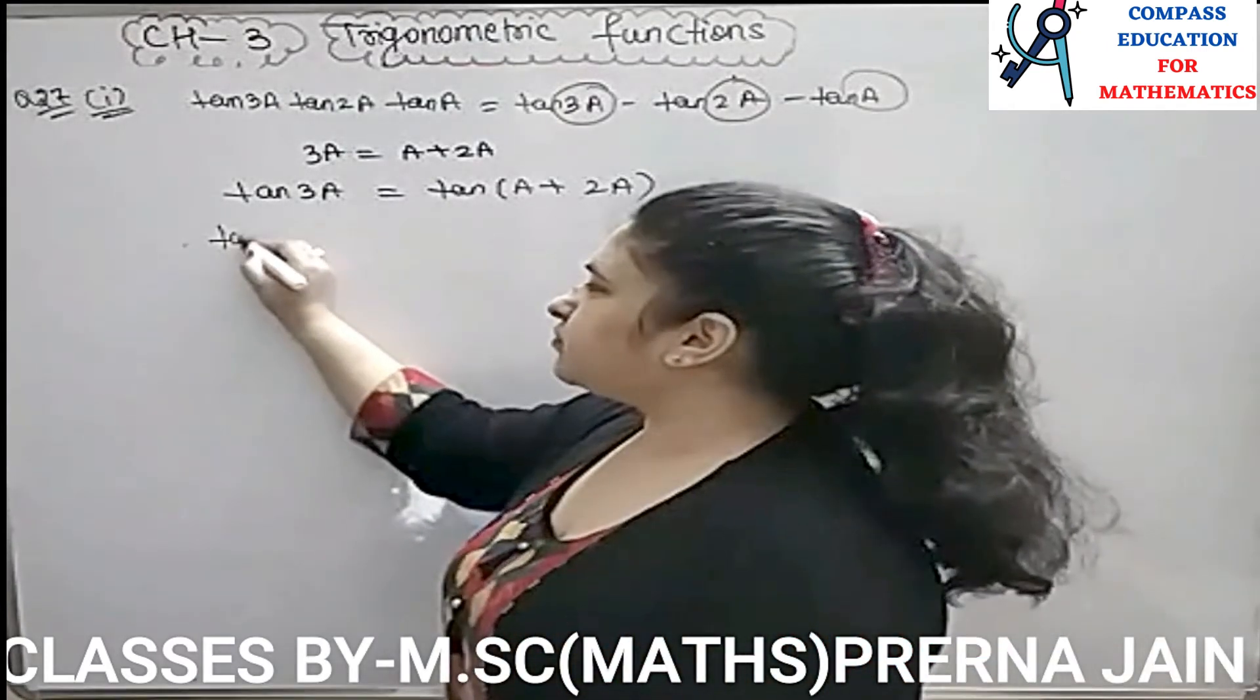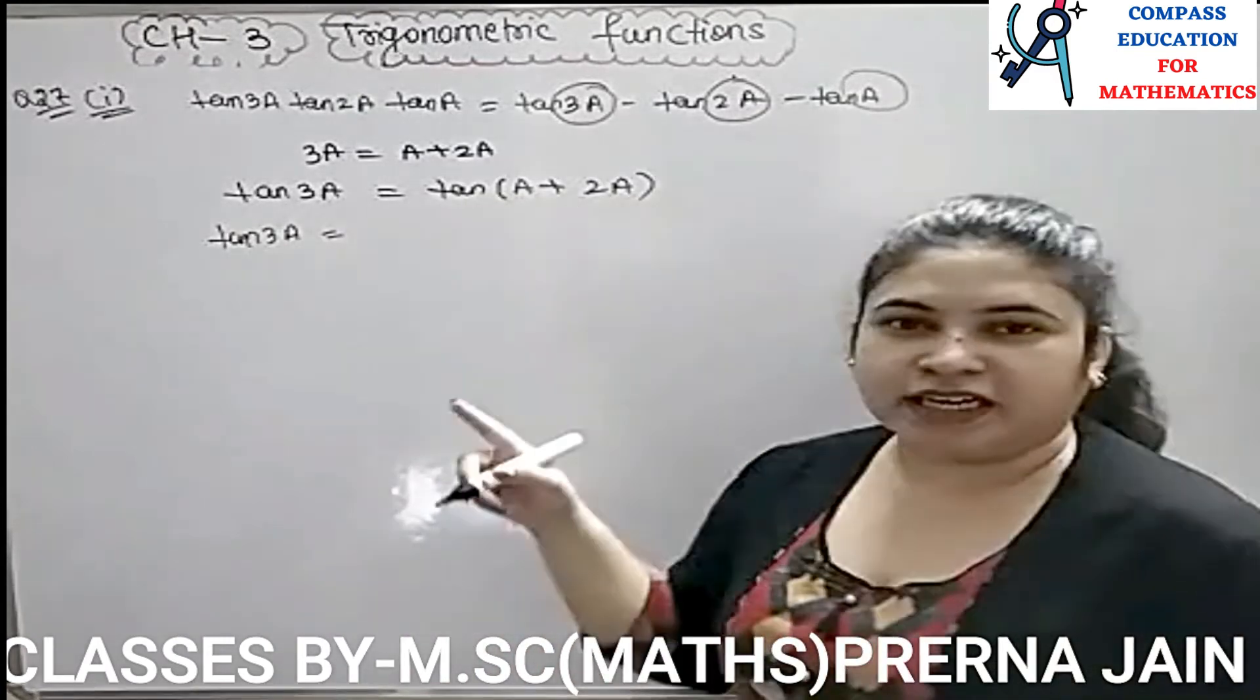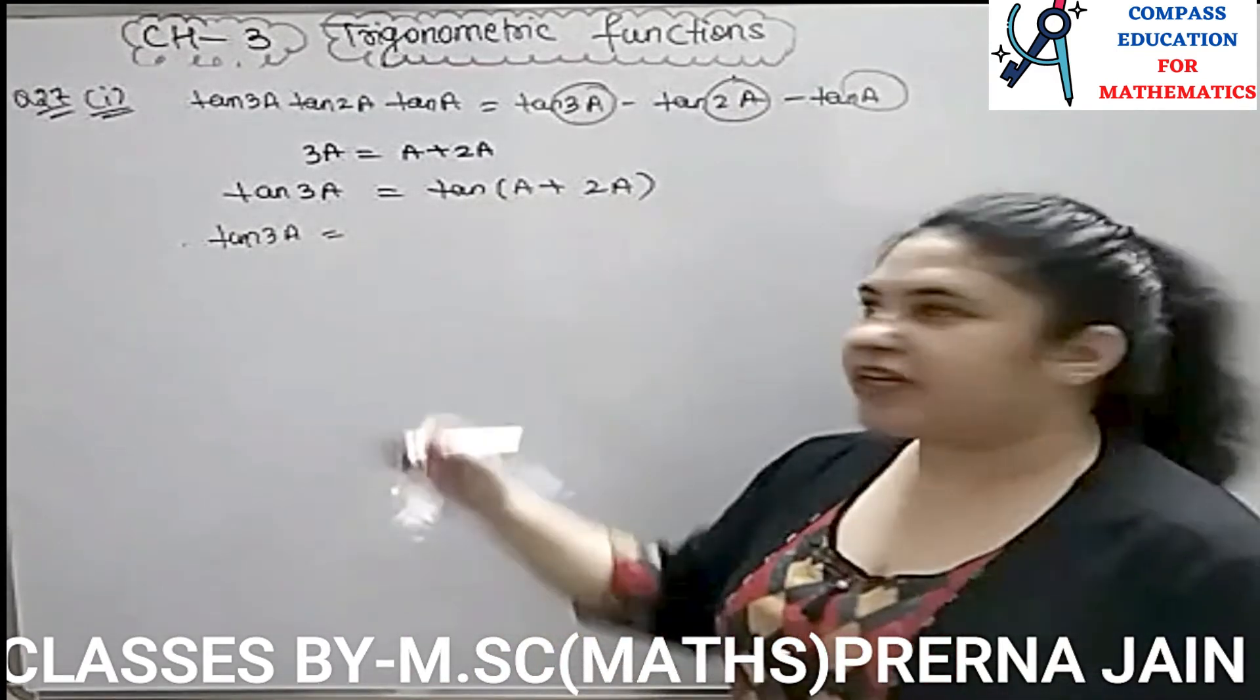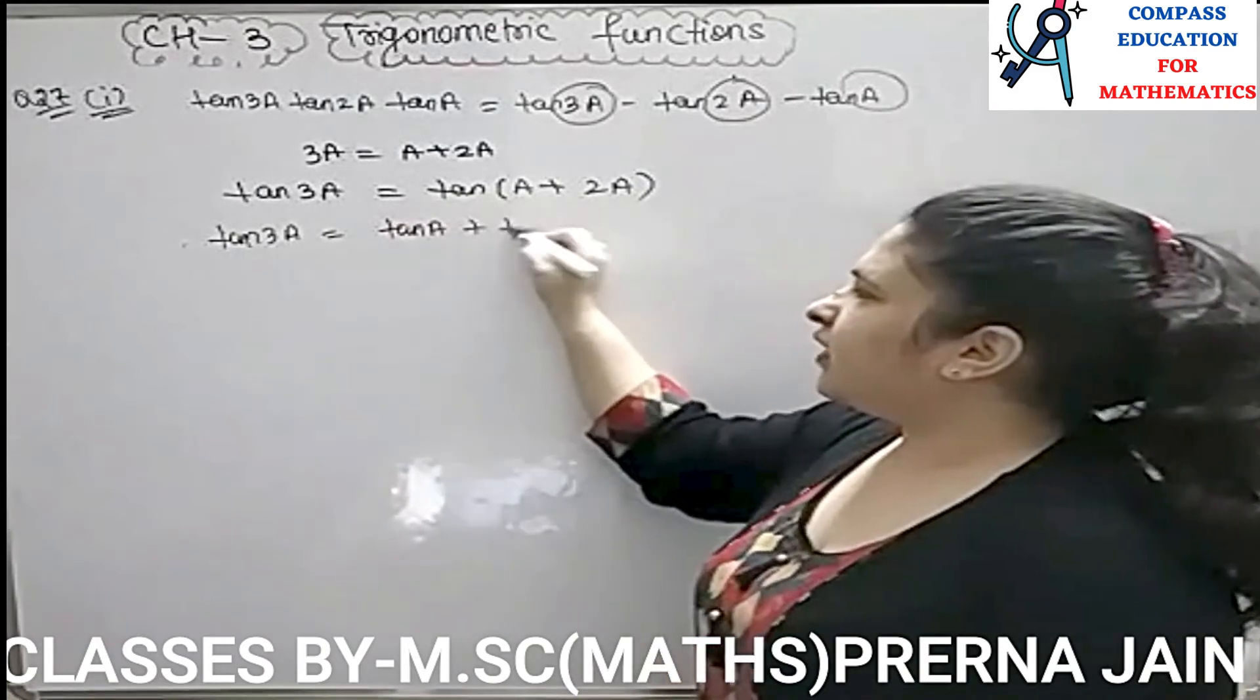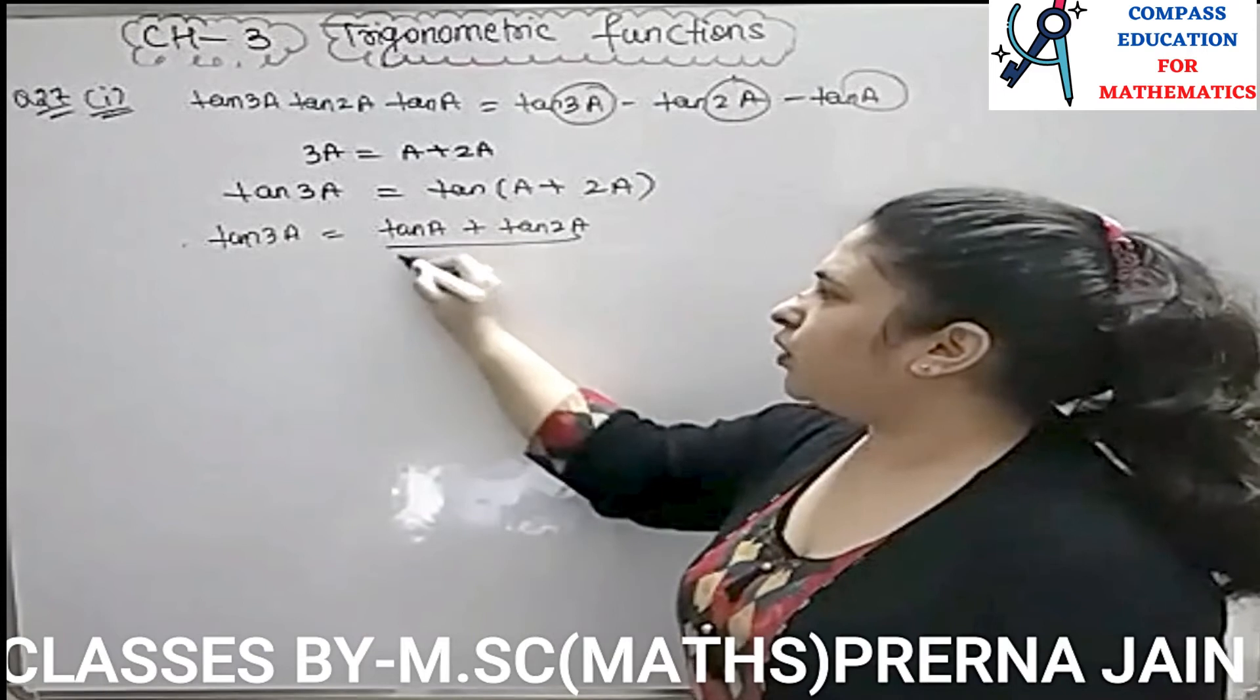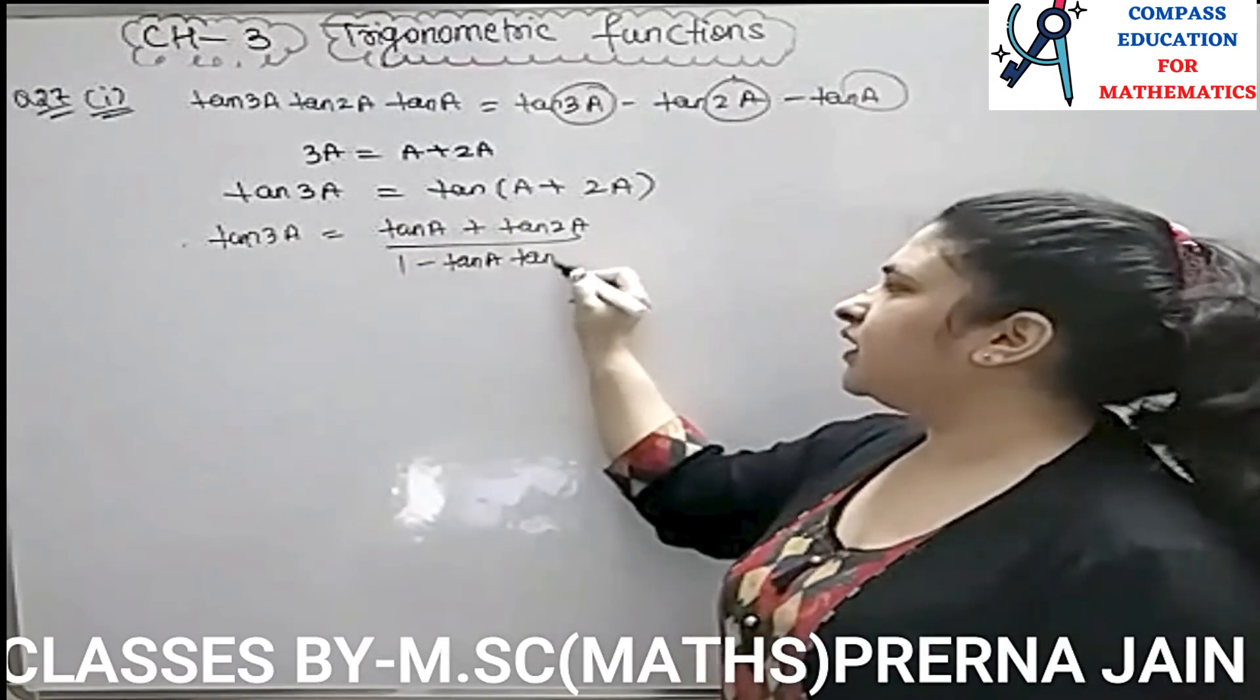What will happen now? What will happen with TAN? TAN 3A. TAN A plus B identity. What is TAN A plus B identity? TAN A plus TAN B upon 1 minus TAN A TAN B. Okay, I am doing this.